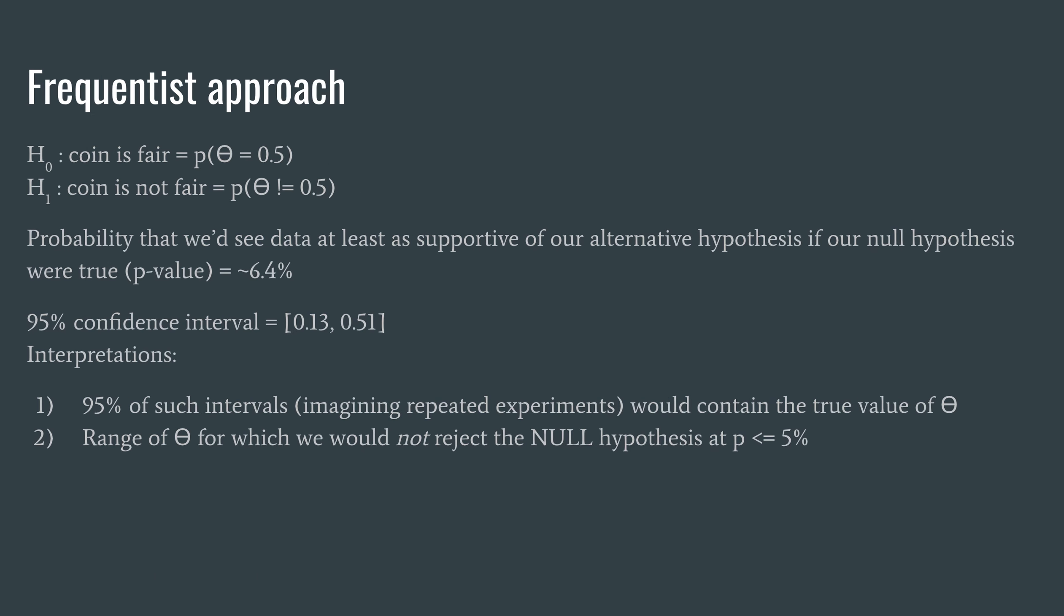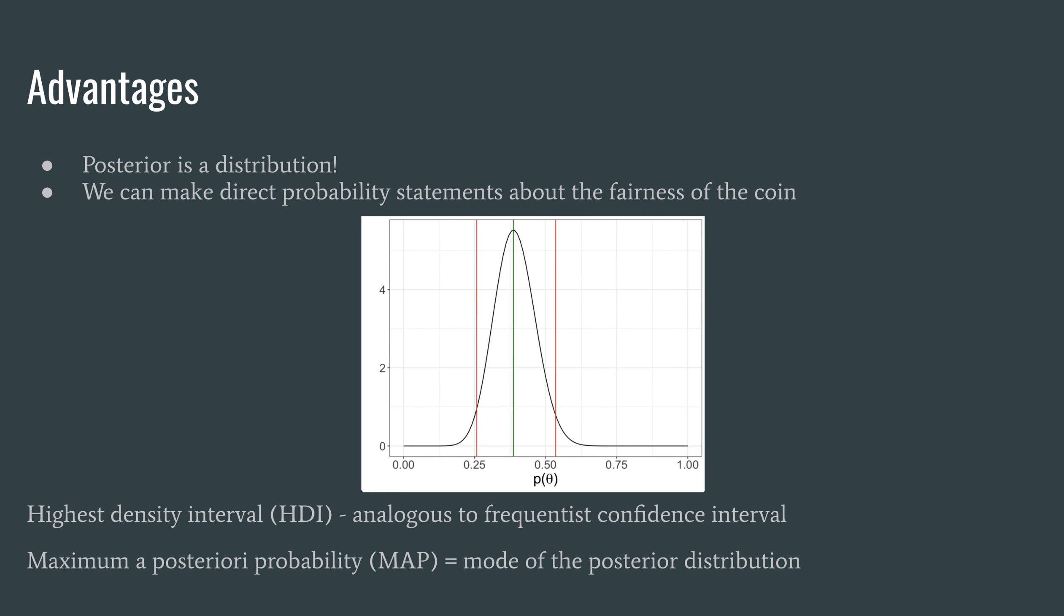So in the frequentist approach we calculated the 95% confidence interval. And recall the interpretation of a confidence interval is 95% of such intervals imagining repeated experiments would contain the true value of theta, which is a somewhat counterintuitive statement and arguably not what we really want to know.